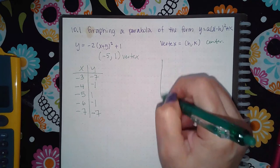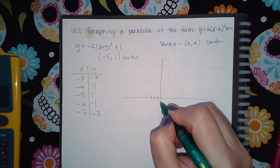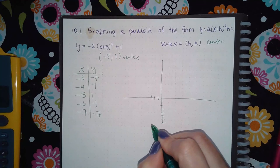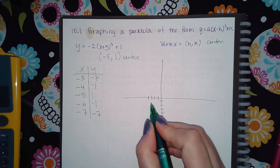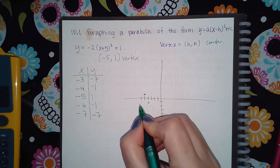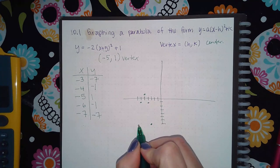So if I graph this on the paper, I get negative 3 and negative 1, 2, 3, 4, 5, 6, 7. And then I get negative 4 and negative 1, I get negative 5 and positive 1, negative 6 and negative 1, and negative 7 and negative 7.